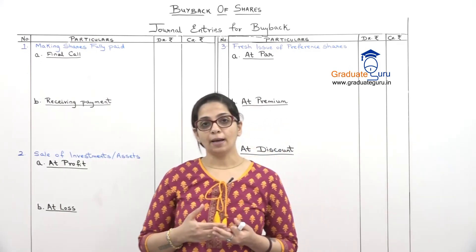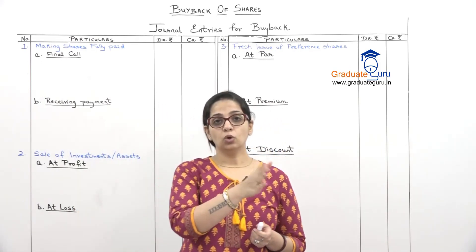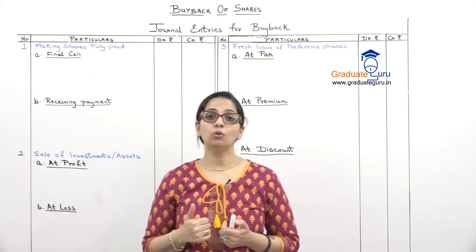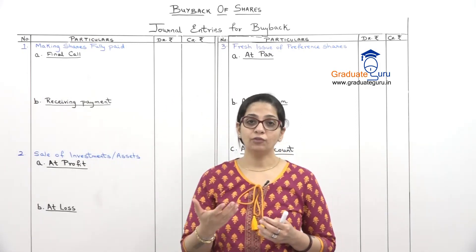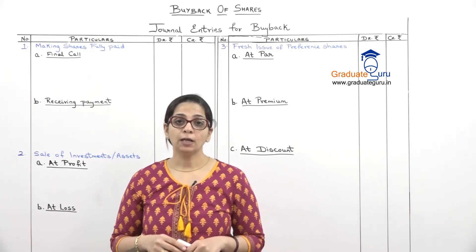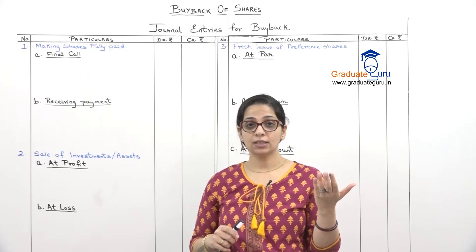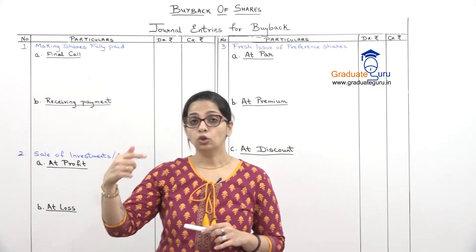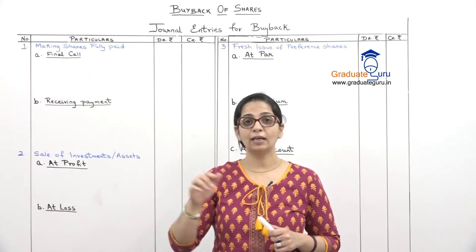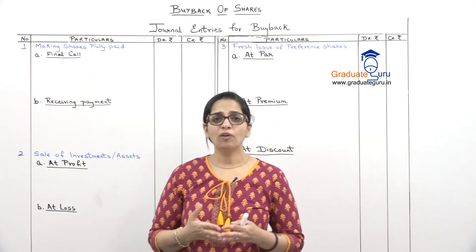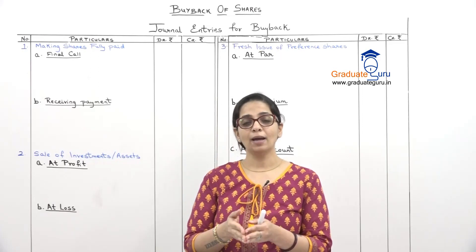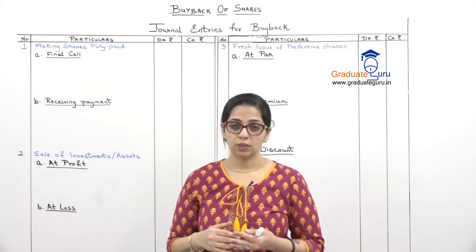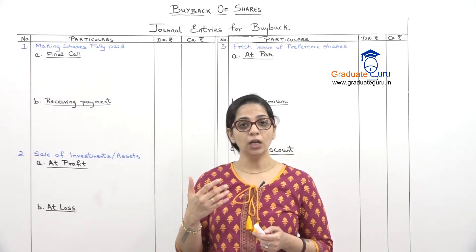Now when we are going to do buyback, before the actual buyback, we will do a few other things. One source of buyback was fresh issue of shares, so we will have to do some fresh issue of shares. Sometimes if the shares are still partly paid — meaning the full share amount has not been received — we have to make them fully paid first, only then can we buyback. Also, to provide funds for buyback, sometimes just before buyback the company sells its old assets or some investments.